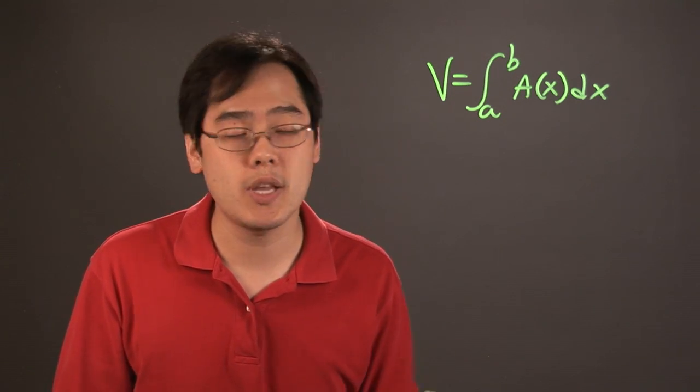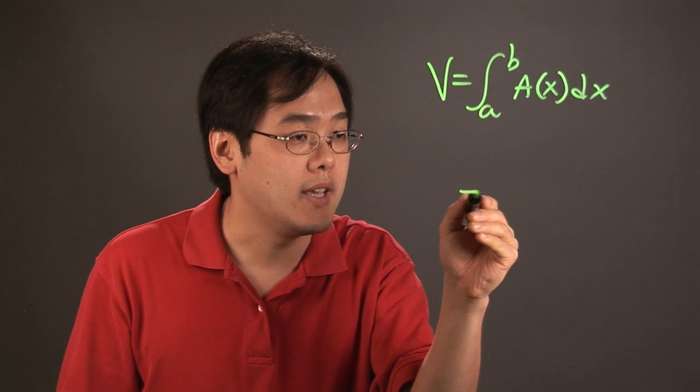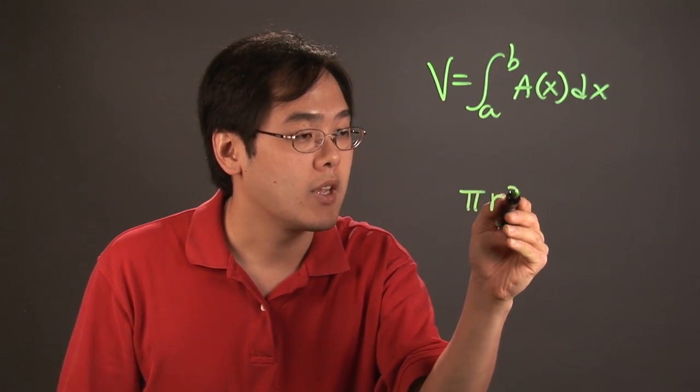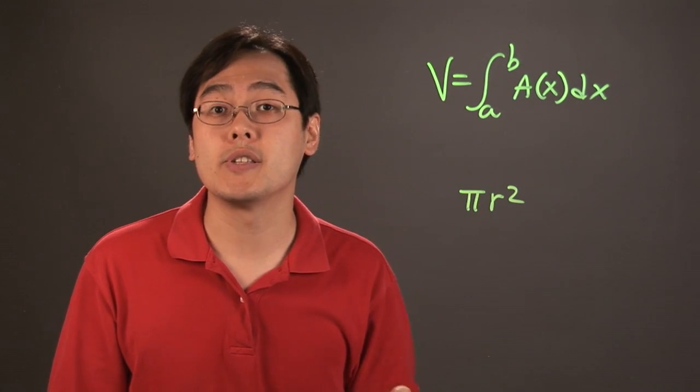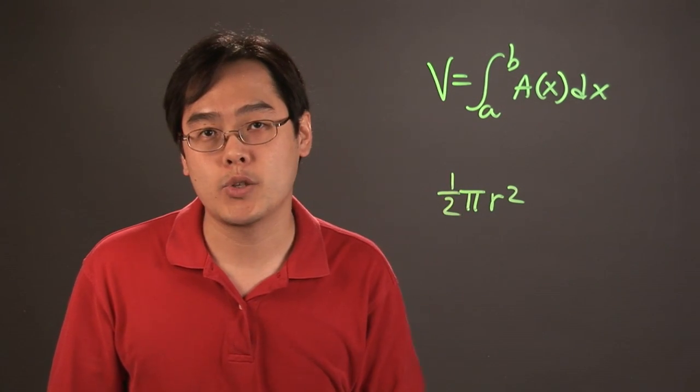Now if you're going to use cross sections using semicircles, you want to consider that the area of a circle is pi r squared. Now since a semicircle is half of that, you may end up using one-half pi r squared.